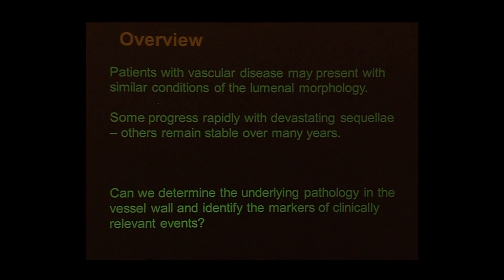The key question we're trying to address with our imaging approaches is the realization that patients with vascular disease may present with very similar luminal morphology, but in many cases some will progress rapidly with devastating sequelae, whereas others with apparently similar anatomies may remain stable over many years. Imaging may help identify the drivers of more rapid progression and bad outcomes.